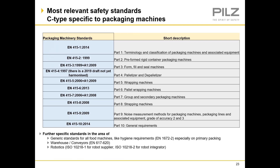The Type C standards for packaging machines are EN 415 parts 1 to 10. Part 1 is terminology and classification. Part 2 covers preformed rigid container packaging machines. Part 3 covers form fill and seal machines. Part 4 is palletizers and depalletizers. Part 5 is wrapping machines. Part 6 is pallet wrapping machines. Part 7 covers group and secondary packaging machines. Part 8 covers strapping machines. Part 9 is noise measurement methods applicable to all packaging machines. Part 10 is general requirements supplementing all other parts, particularly where new automation methods or robots are used.